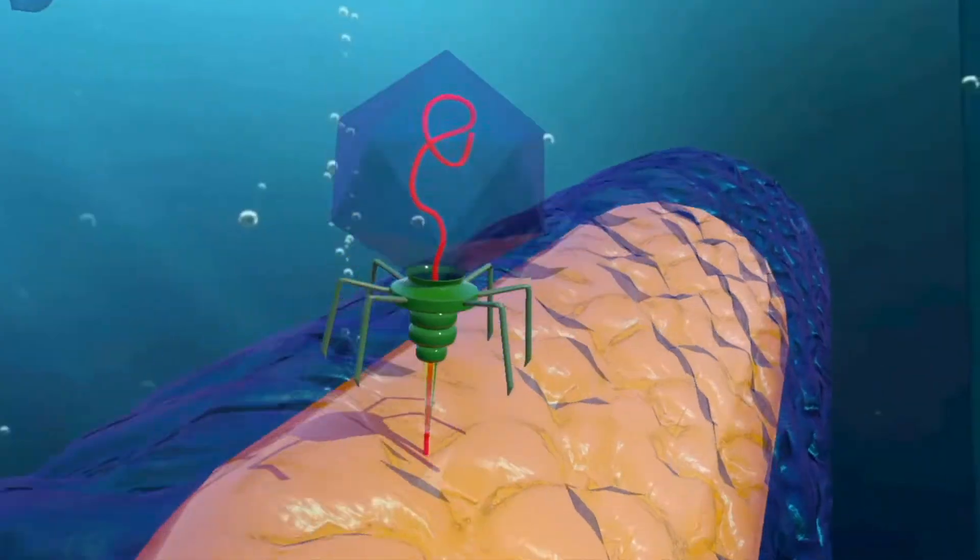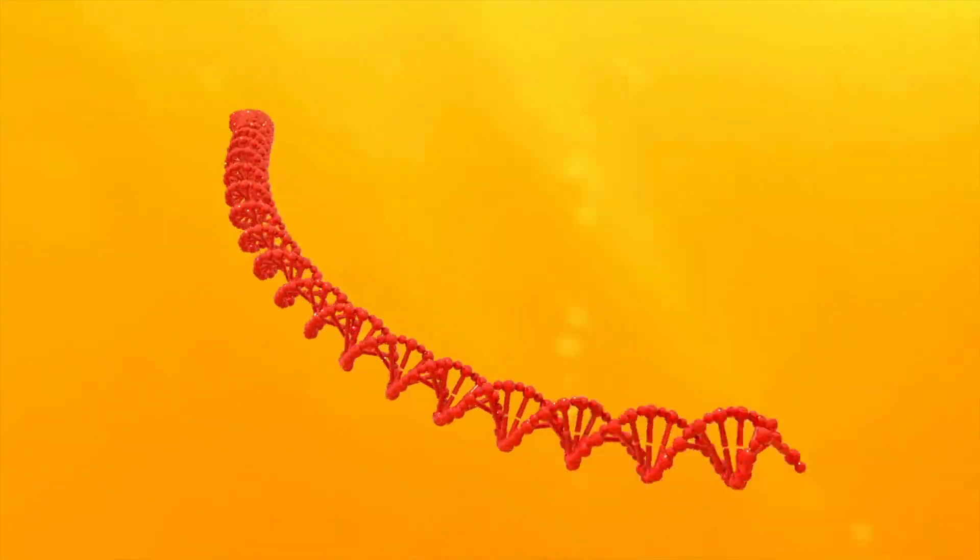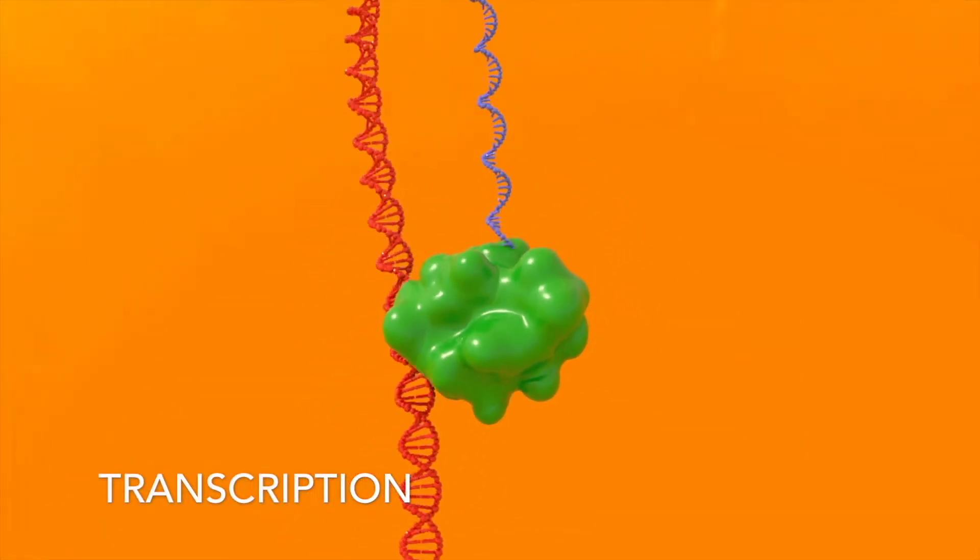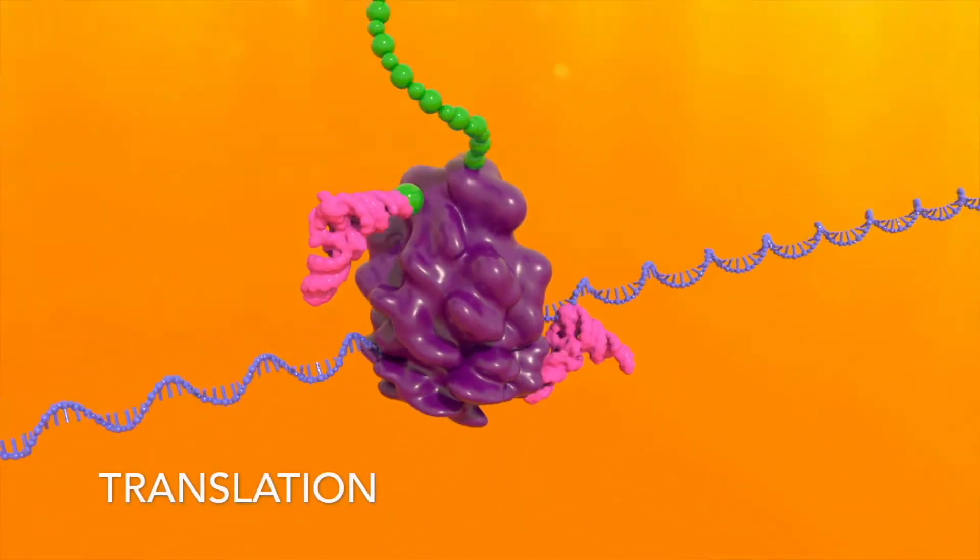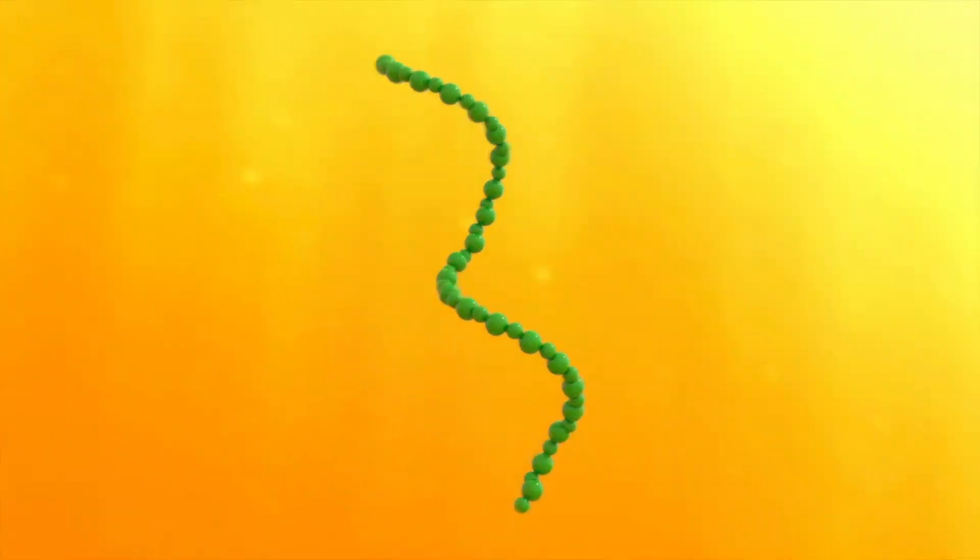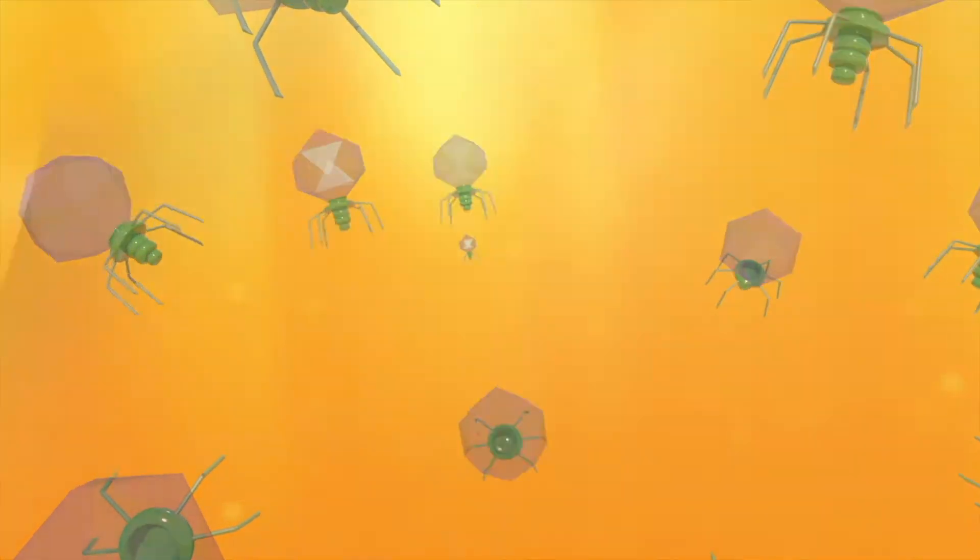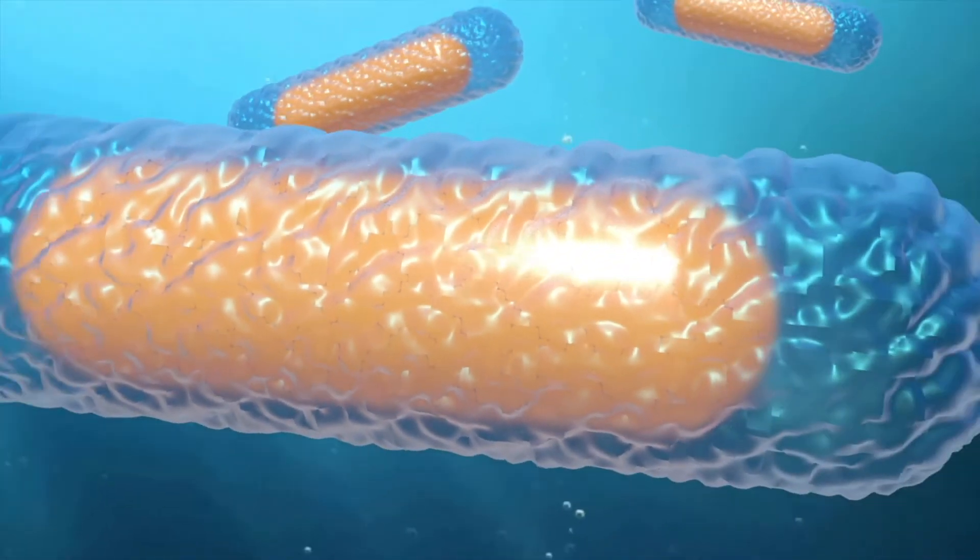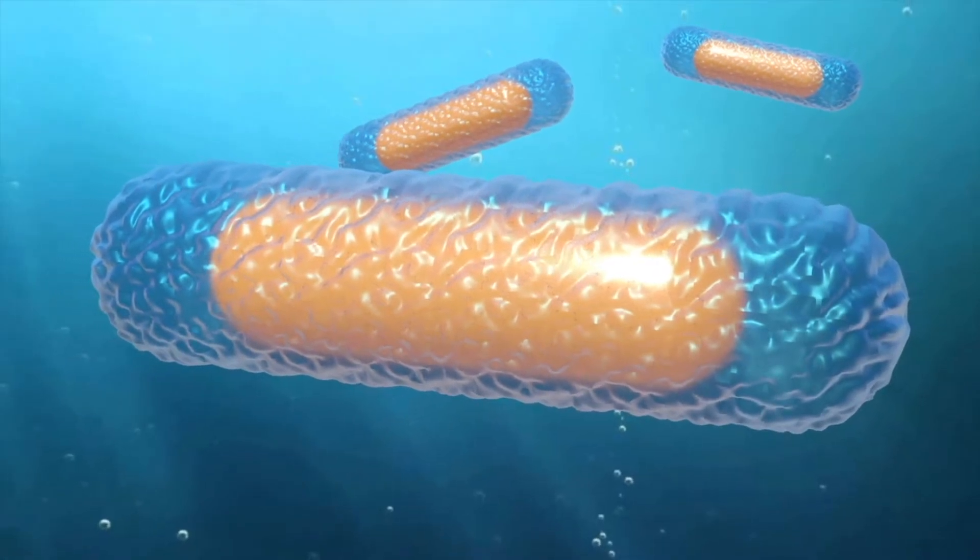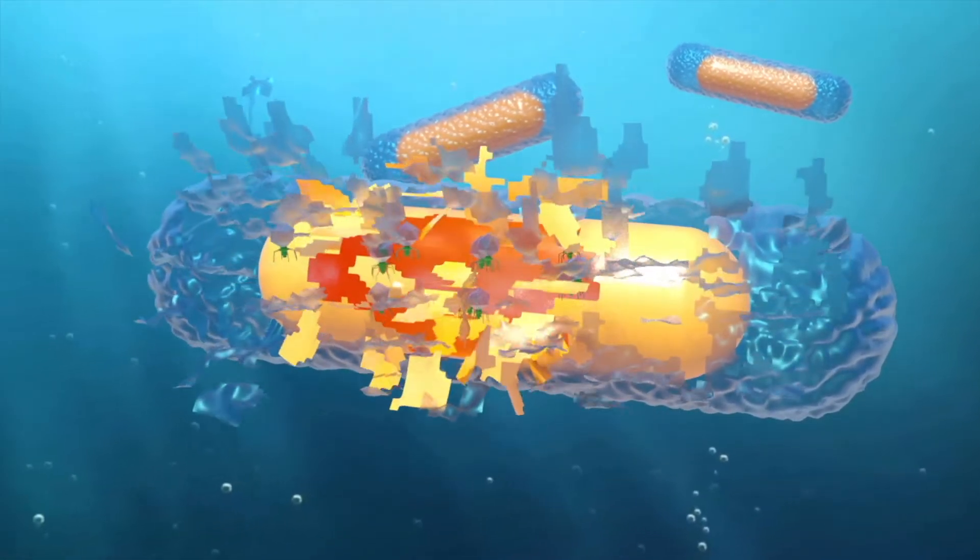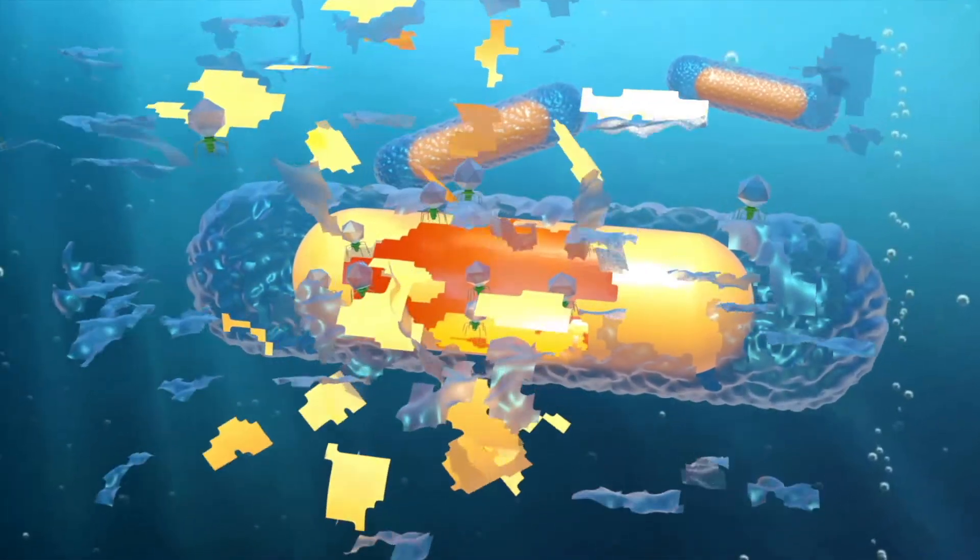When they're infecting a host, what's really happening is they're hijacking the bacterium's gene replication and protein expression machinery to manufacture replicates of themselves. They continue this process until the cell has completely exhausted itself, followed by a fatal lysing event that releases the newly synthesized phages while simultaneously killing the bacterium.